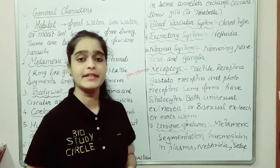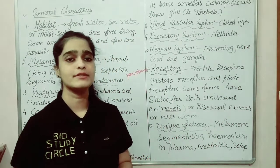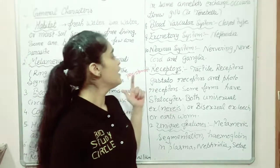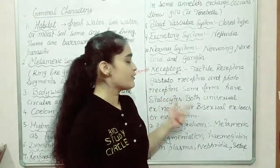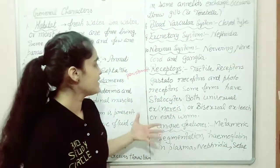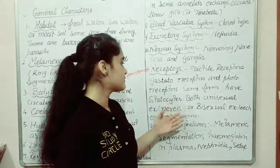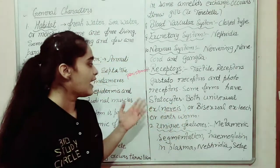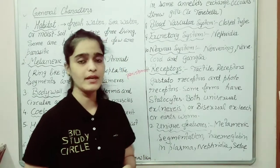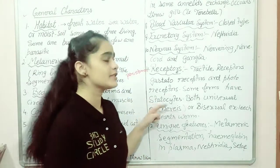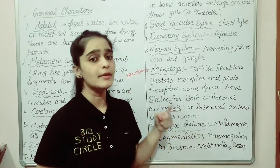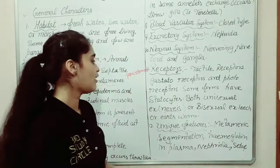Receptors present in annelids include tactile receptors, which are also called touch receptors; gustatory receptors, which are also known as taste receptors; and photoreceptors, which are light-sensitive cells. Apart from these, a statocyst is present which acts as the balancing organ.